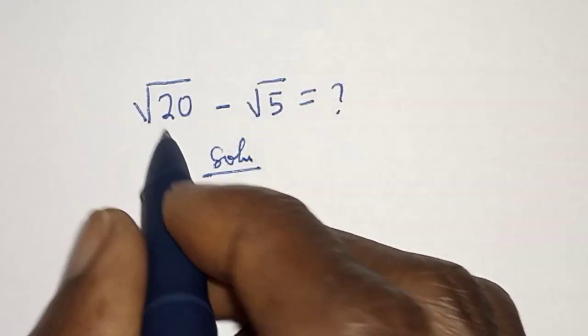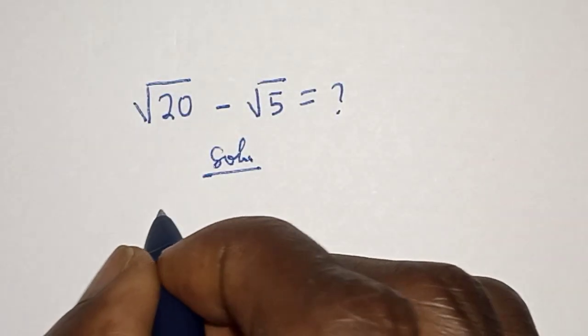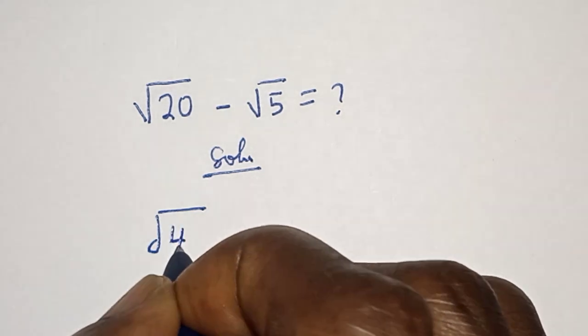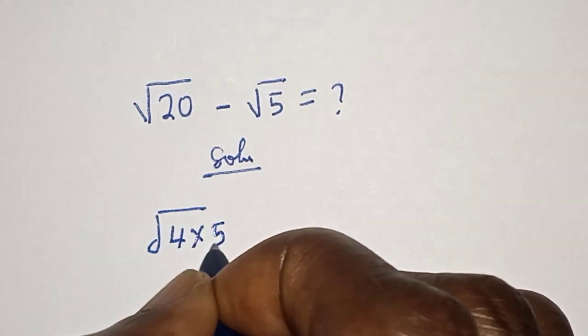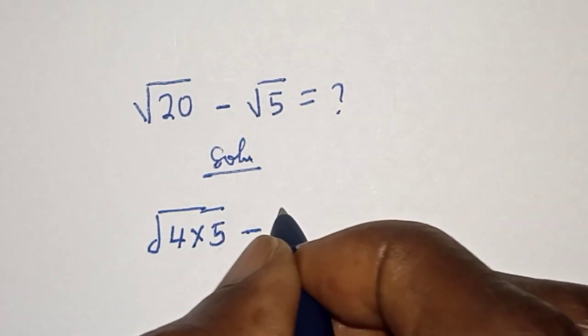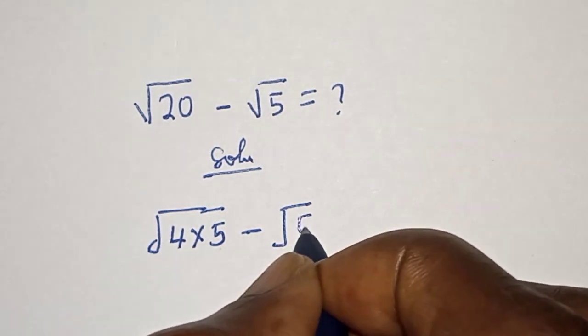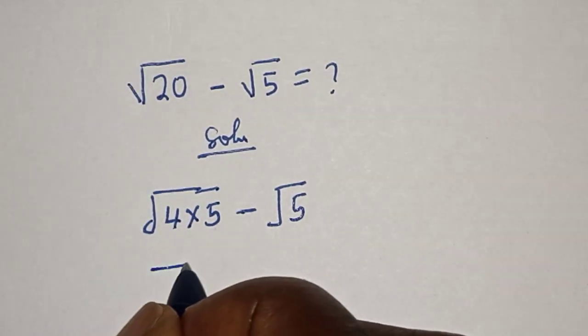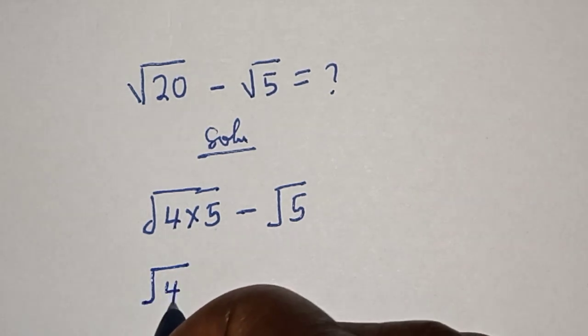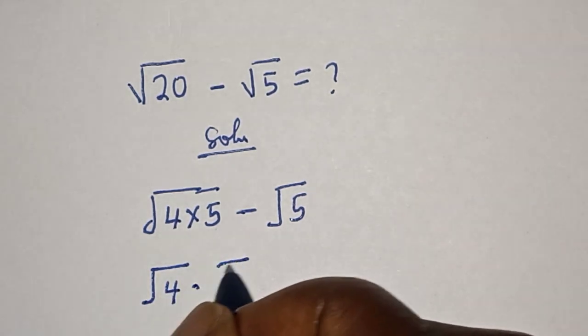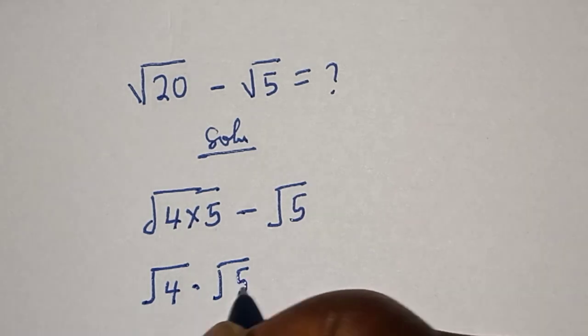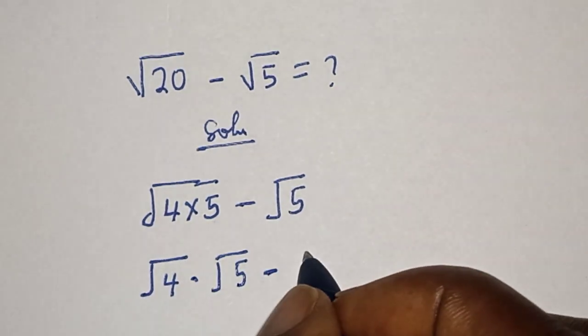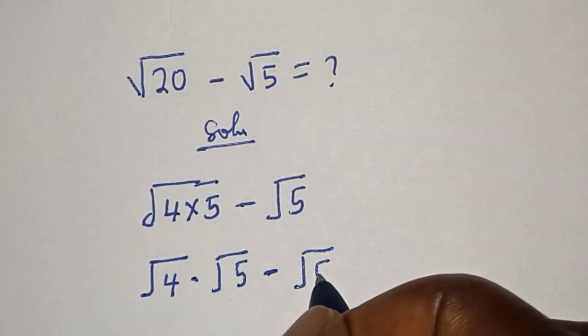Square root of 20 can be written as square root of 4 multiplied by 5, then minus square root of 5. Now, this is square root of 4 multiplied by square root of 5 minus square root of 5.